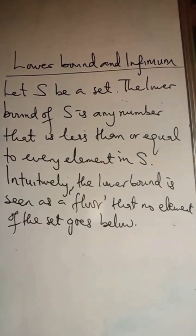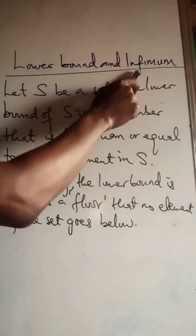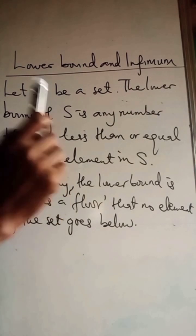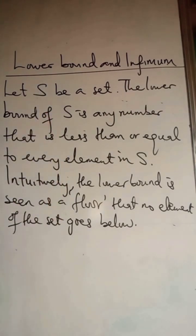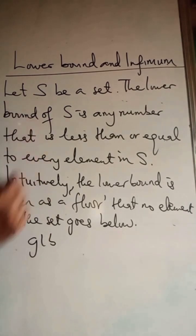But the greatest of all these lower bounds is what is known as the infimum of the set. It is the greatest of all of them. It is written as the infimum, or GLB — greatest lower bound.